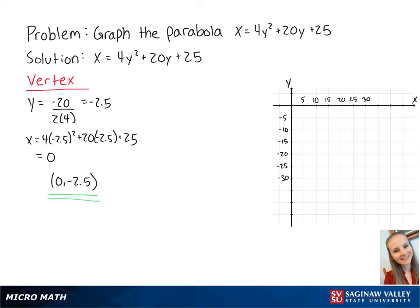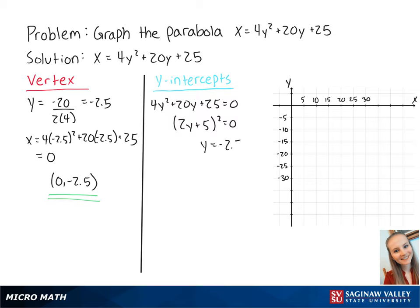Now we want to find the y-intercepts, which is when x is equal to 0. So we set up the equation 4y squared plus 20y plus 25 equals 0. The left side factors out to become 2y plus 5 squared equals 0, which gets us y equals negative 2.5.